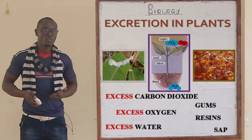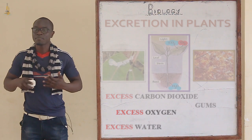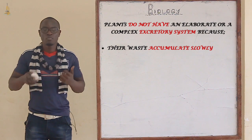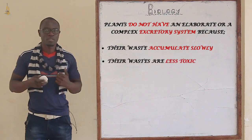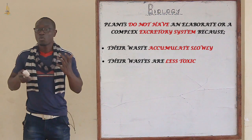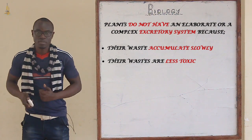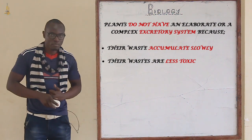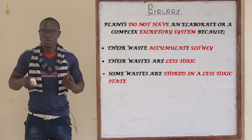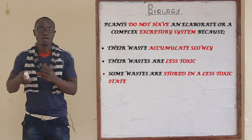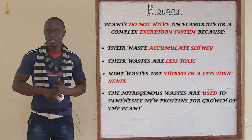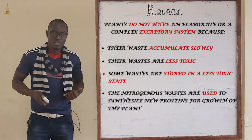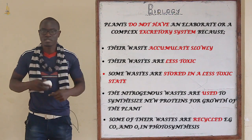Plants do not have an elaborate excretory organ or excretory system as compared to animals. This is because waste in plants accumulates very slowly. Also, the waste of plants is basically carbohydrates, which are less toxic compared to amino acids, proteins, and fats found in animals. Waste in plants is always stored in a less harmful state.